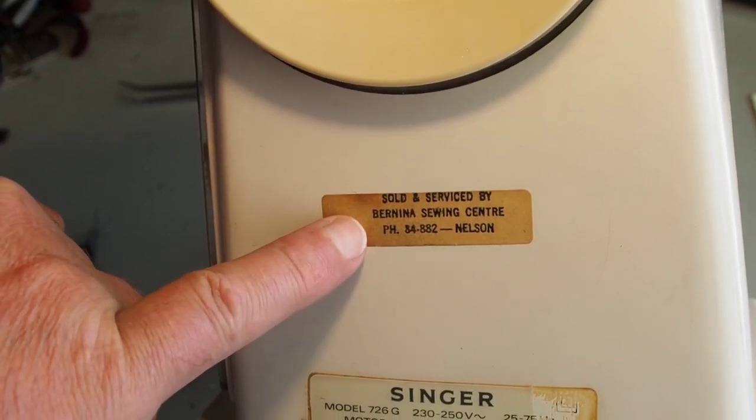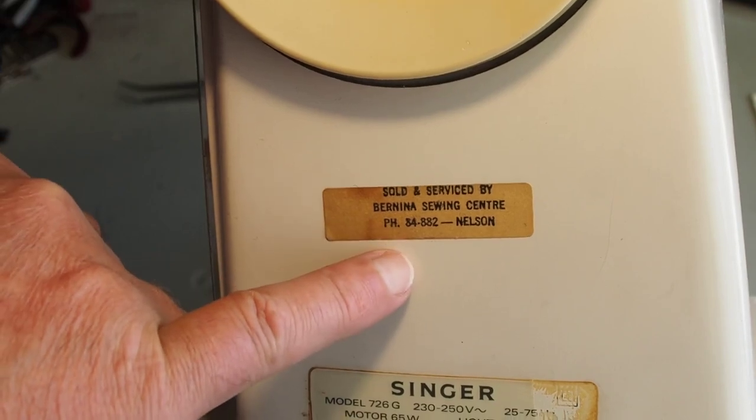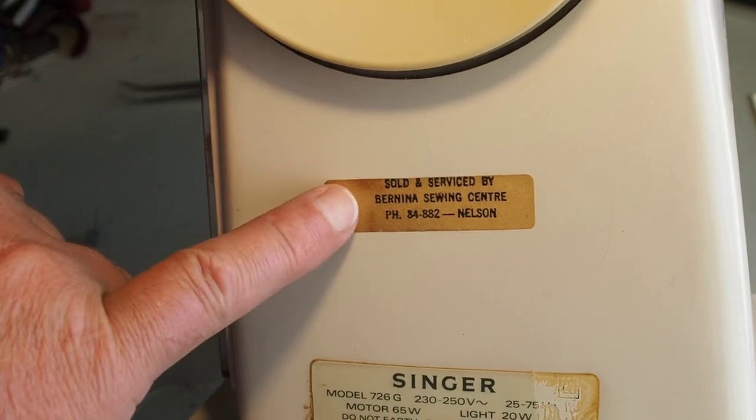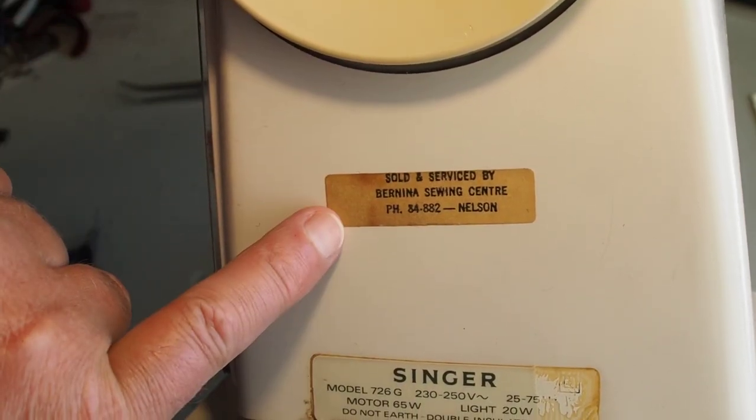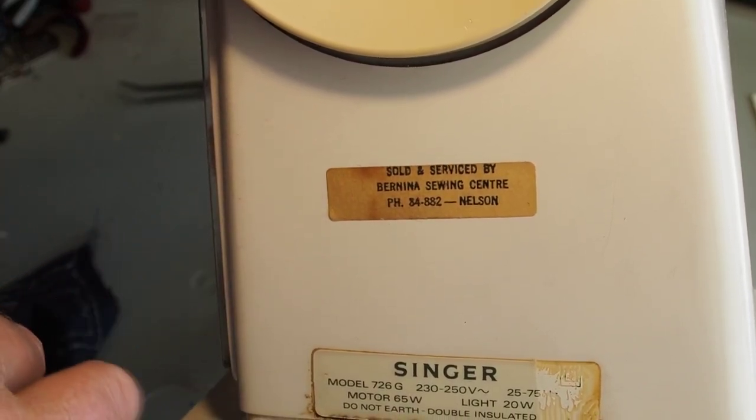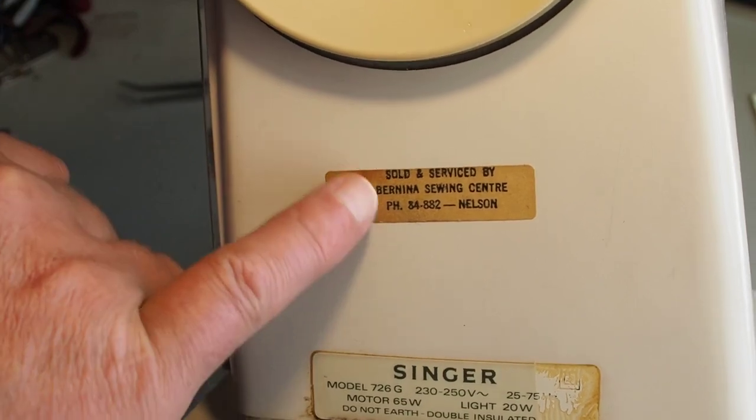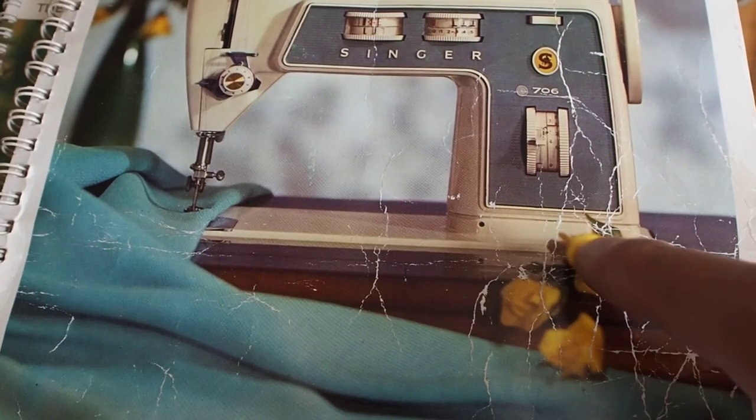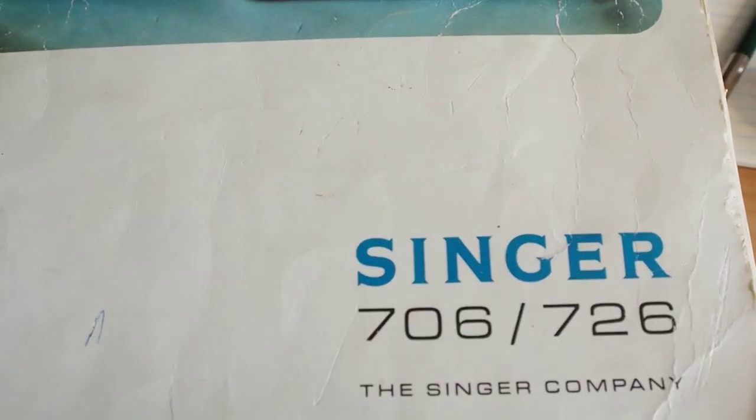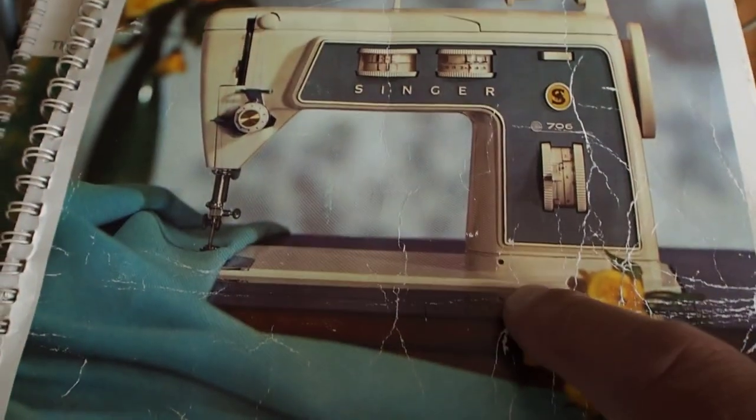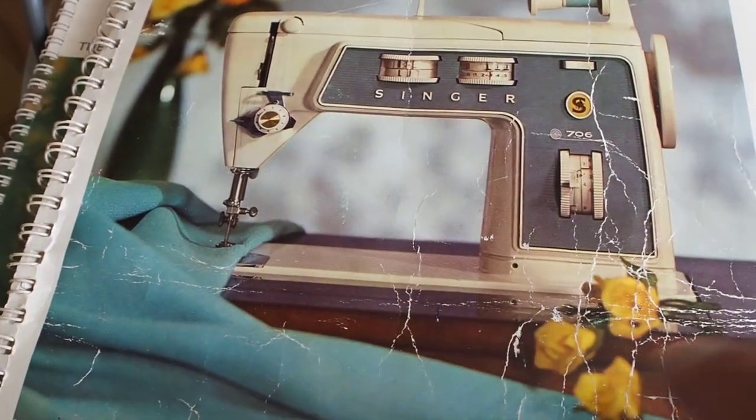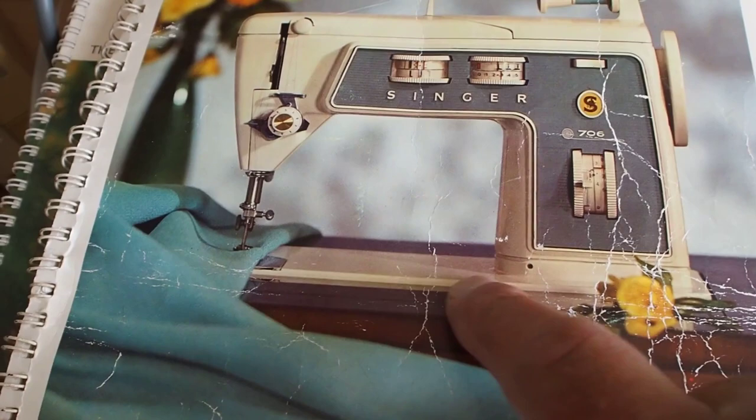The other thing I thought was quite interesting on this machine is this label here - 'Sold and Serviced by Bernina Sewing Center' in Nelson. That shop's actually still open, still running. Could this just have been a label put on when the machine was serviced, or did they actually sell these machines? I doubt that Bernina would have sold Singers, so maybe that's just a service sticker. I've just noticed here too on the manual for the 706/726, the 726 must be the free arm like the one I've just shown you, and this must be the 706 with the flat bed.